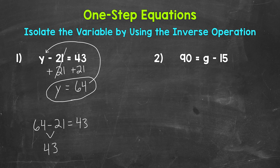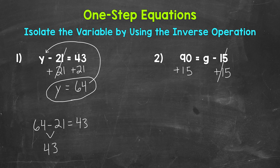Let's move on to number two, where we have 90 equals g minus 15. We need to isolate that variable of g. 15 is being subtracted from g. So we need to undo that subtraction by using the inverse operation. The inverse of subtraction is addition. So let's add 15 to the right side of the equation. Now whatever we do to one side of the equation, we must do to the other. So let's add 15 to this side as well. Now on the right side of the equation, we are subtracting 15 and adding 15. So these 15s cancel out. They equal 0. So g is now isolated. It's by itself.